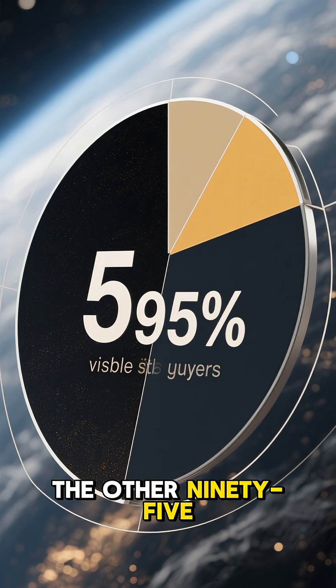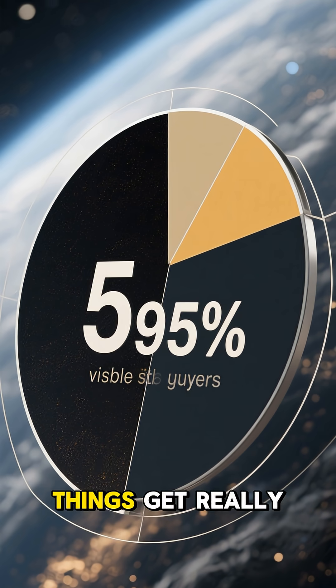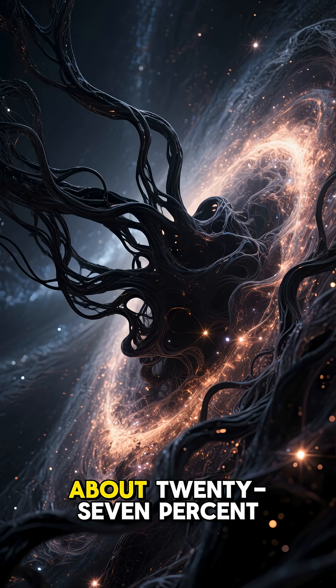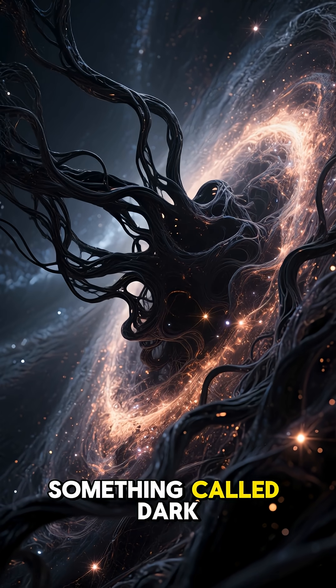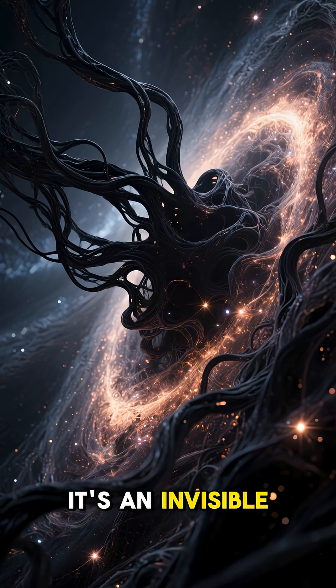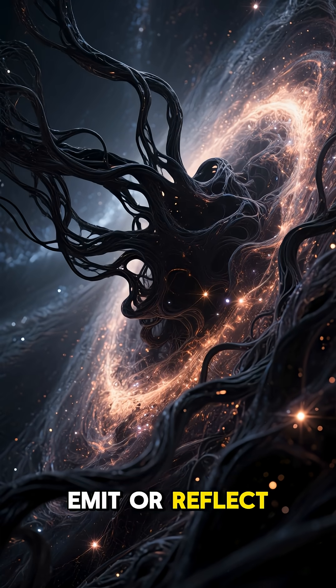So, what about the other 95%? Well, that's where things get really mysterious. About 27% of the universe is made of something called dark matter. It's an invisible substance that doesn't emit or reflect any light.